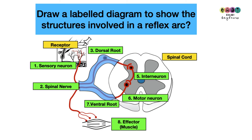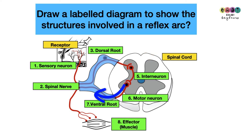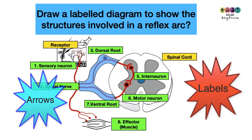Next question: draw a labelled diagram to show the structures involved in a reflex arc — the pathway of the nerves in a reflex action. The receptor detects the stimulus; the impulse is generated and carried by a sensory neuron into the spinal cord through the dorsal root. It passes to an interneuron, and simultaneously to another neuron sending it to the brain. The impulse then passes from the interneuron to a motor neuron, which exits through the ventral root and arrives at an effector, usually a muscle. Include an arrow showing direction.